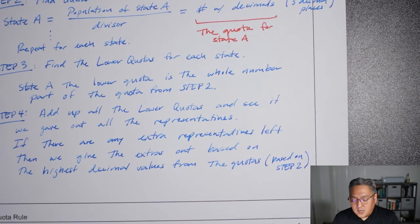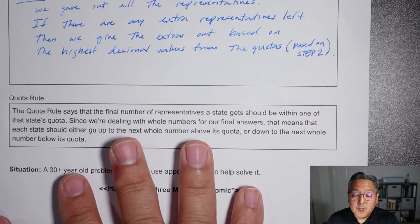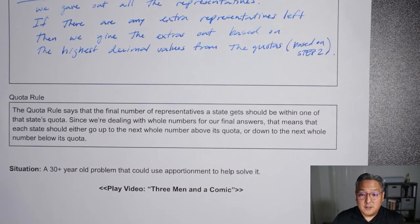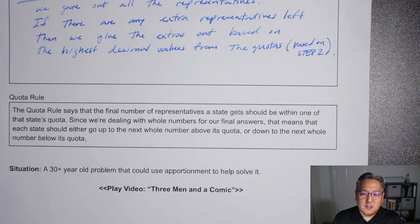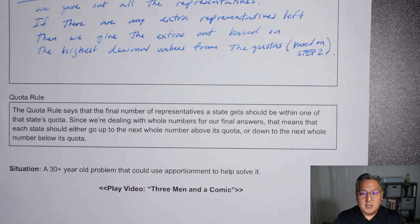I also want to point out that there's a rule we're going to follow called the quota rule. The final number of representatives that each state gets should be within one of that state's initial quota. So if we have two extras, we're not going to give both to the state with the highest decimal. We give one to the state with the highest decimal, then go to the next state with the next highest decimal and give them one. We're always only giving out at most one to each state.